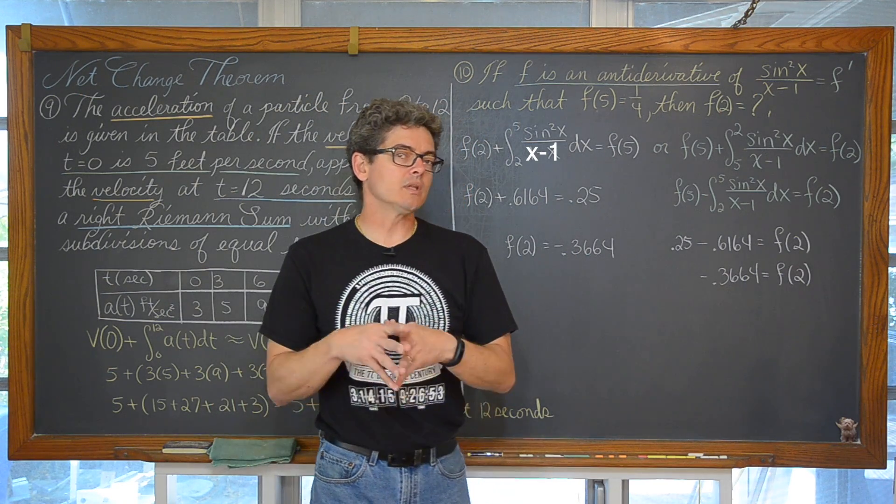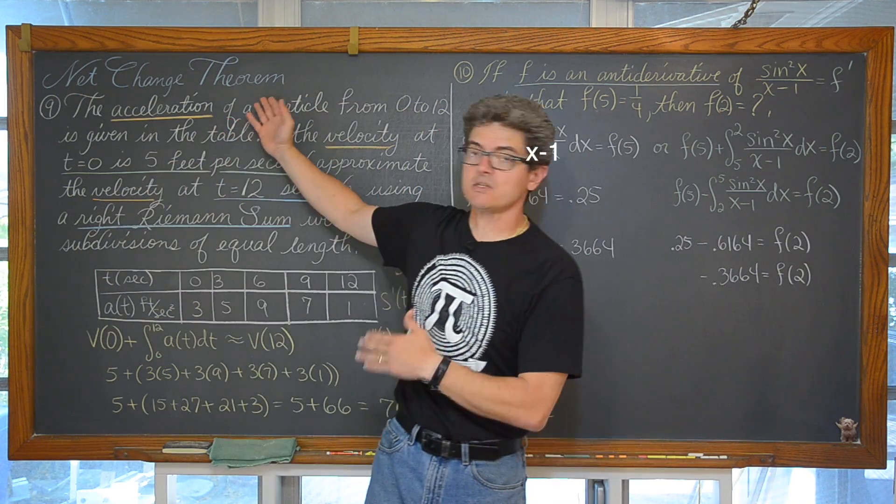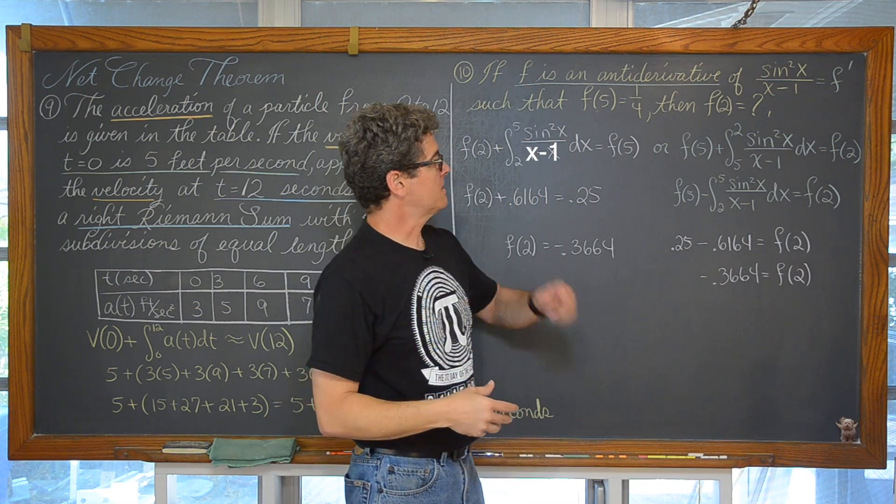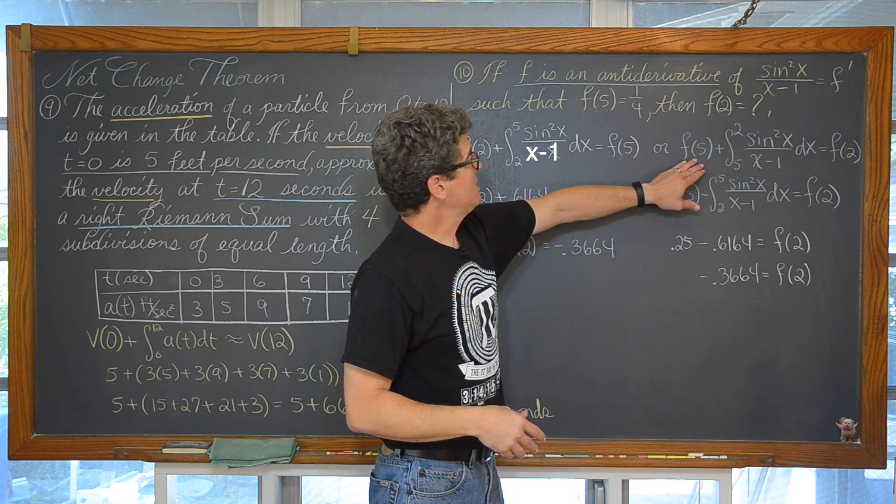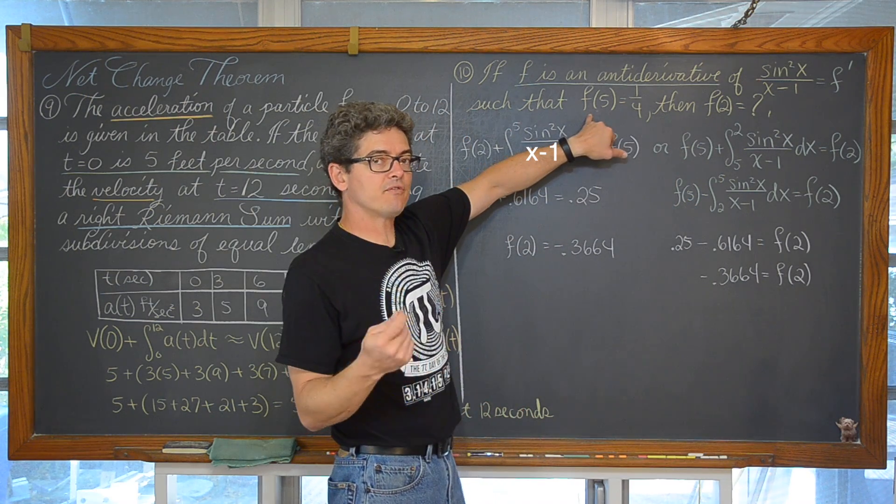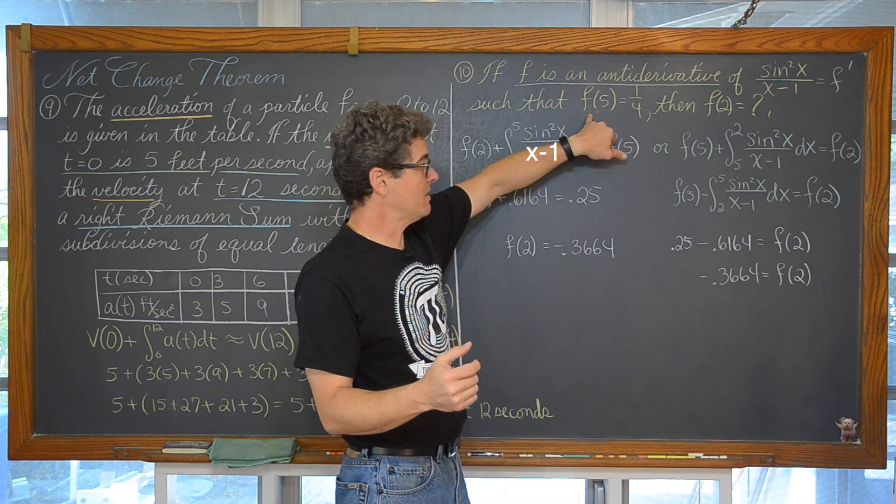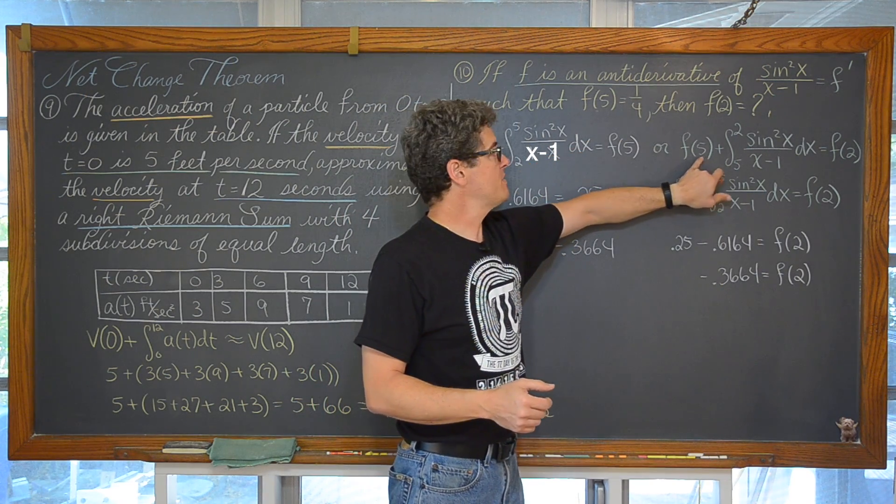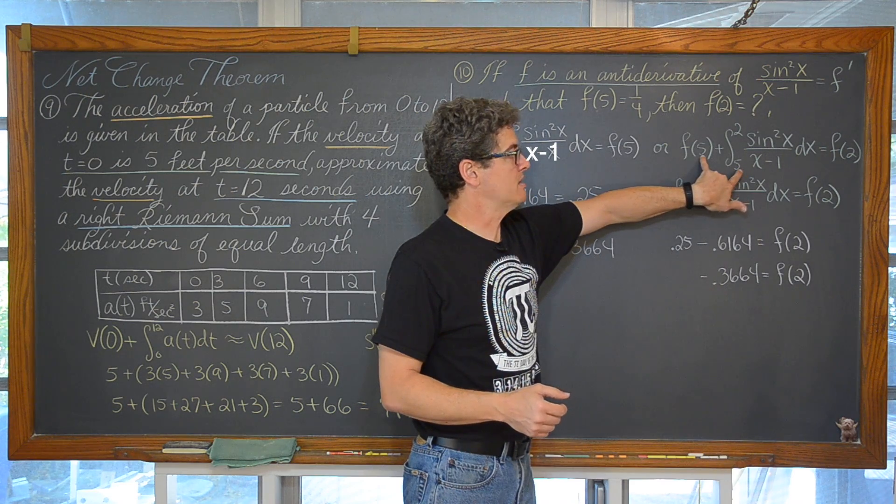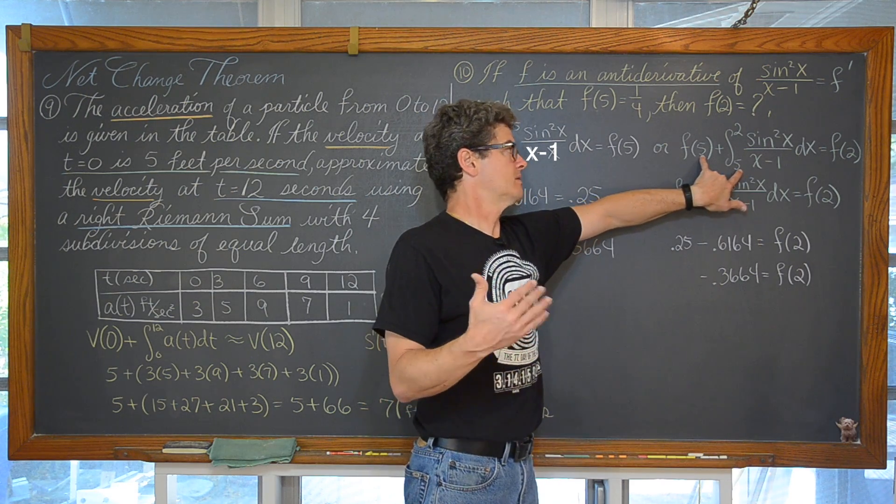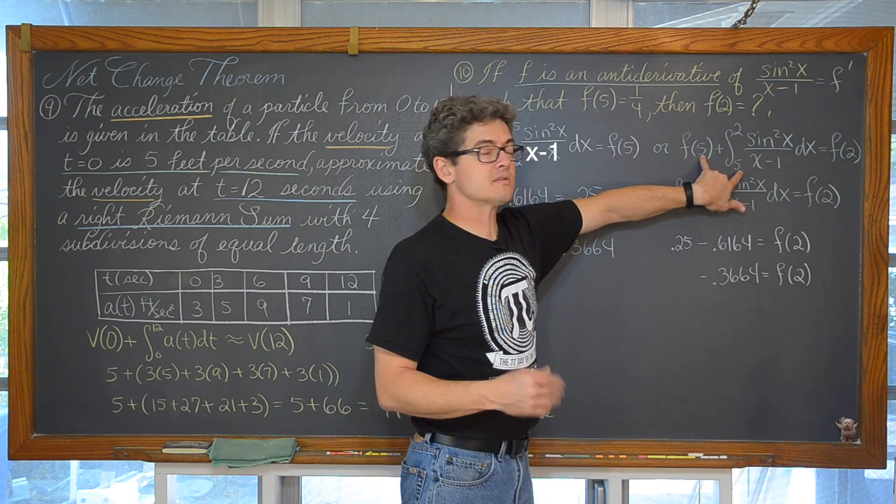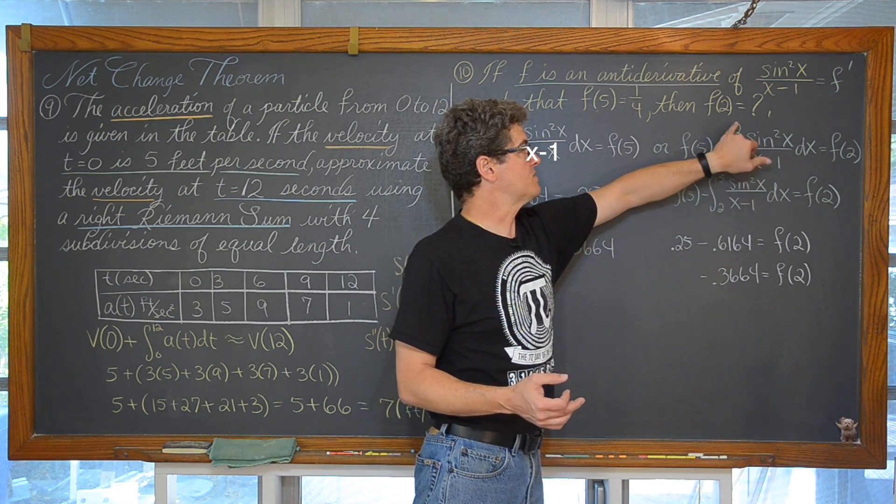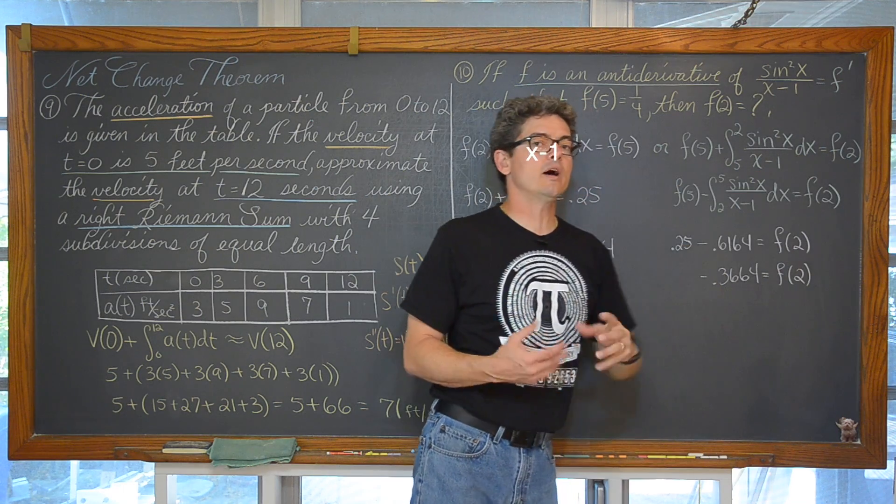But once you do a lot of these net change theorems because they do show up a lot in the AP reviews that I have seen you start realizing that you know our initial condition is f of 5 and we are kind of starting there not if you are moving left to right on the number line but if you go hey my initial condition is f of 5 just make sure that that x value is the same or that domain value if you will is the same as the lower limit on your definite integral. So we have f of 5 plus the definite integral from 5 to 2 of that expression is equal to f of 2.